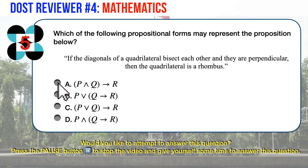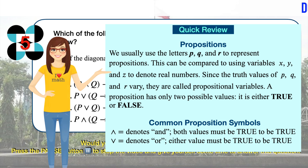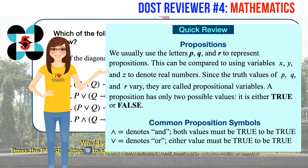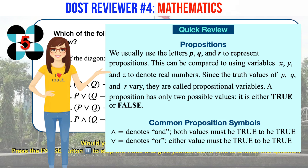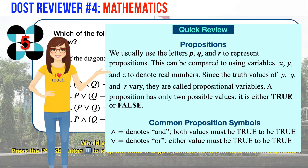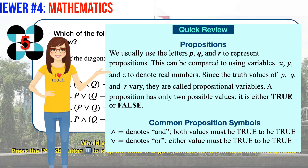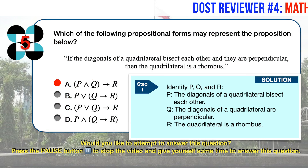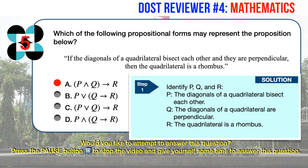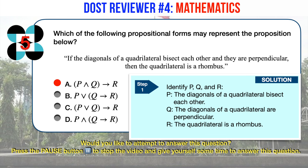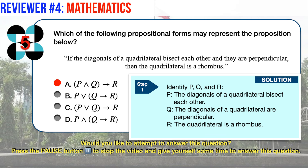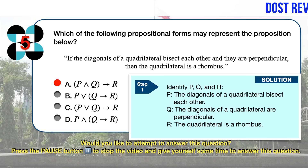The correct answer is A. We usually use letters P, Q, and R to represent propositions — called propositional variables — each having only two possible values: true or false. From our proposition, P is that the diagonals bisect each other; Q is that the diagonals are perpendicular; and R is that the quadrilateral is a rhombus.